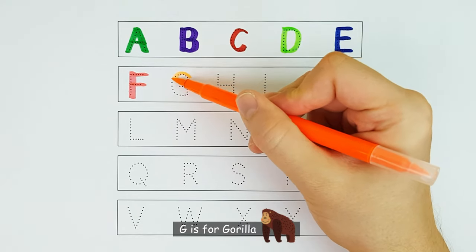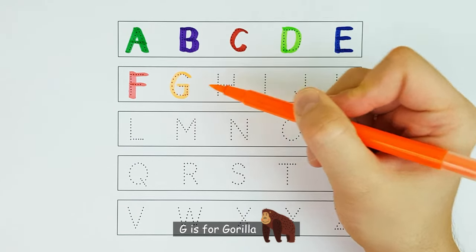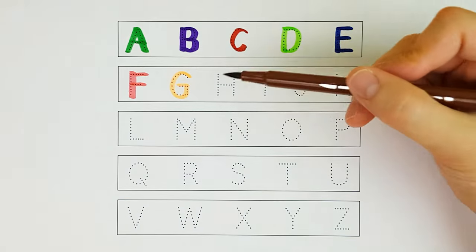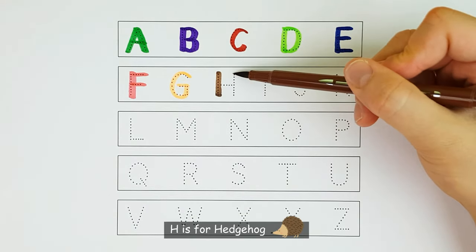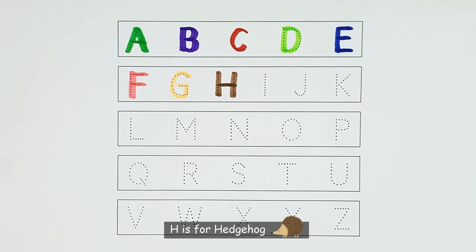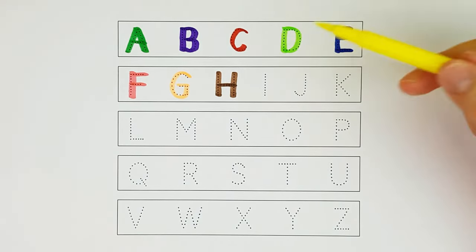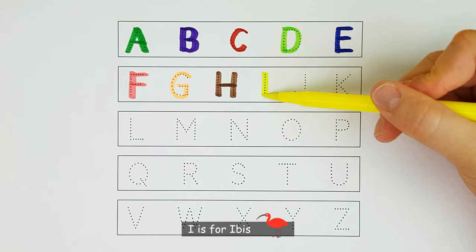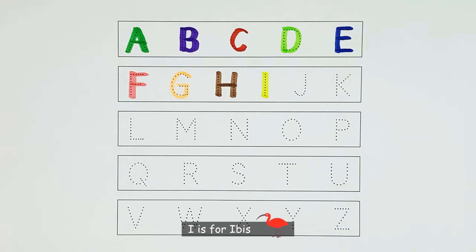G. G is for Gorilla. G. H. H is for Hedgehog. H. I. I is for Ibis. I.